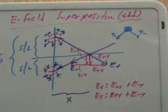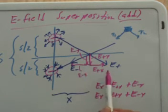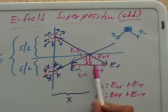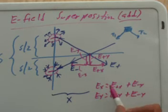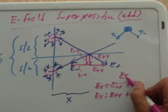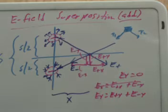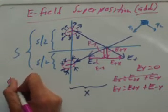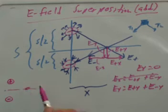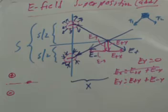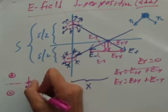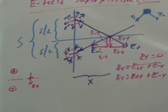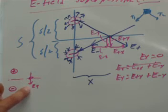Looking at the figure, there's symmetry we can exploit. The total X-electric field has a rightward component from the positive charge and a leftward component from the negative charge — they are equal and opposite. So the total X-electric field is zero. This means that if you have a positive and negative charge and you're interested in the electric field at a point on the perpendicular bisector, it's purely vertical — in this case, pointing downward.